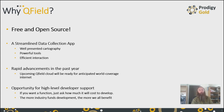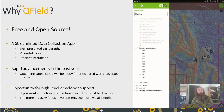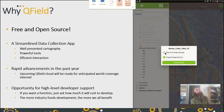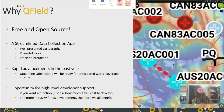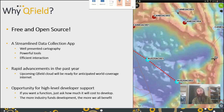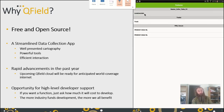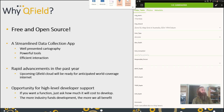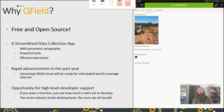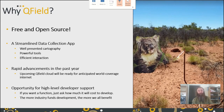So why do we use Qfield? What other options are there? Qfield is open source — it's free and open source software. It's a streamlined data collection app with quite efficient and powerful tools for data collection. There's been rapid advancements in the last year with the upcoming Qfield cloud coming. It's just going to really allow for spatial data to come into play, especially when we have increased internet in the next couple of years. There's also opportunity for high-level developer support. Keep an eye on your developers and help them out by supporting the projects that you need and share them with the community. That's what free and open source software is all about.